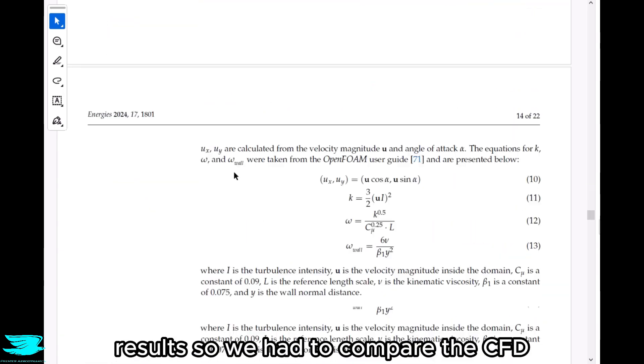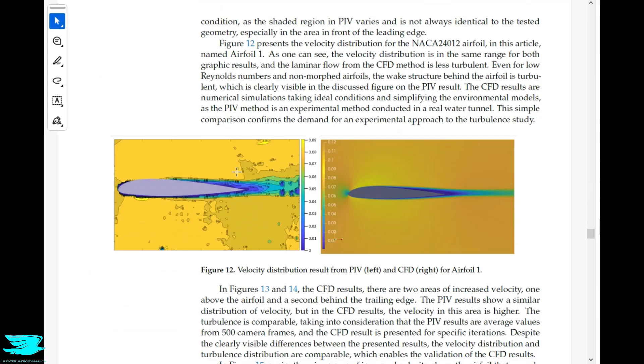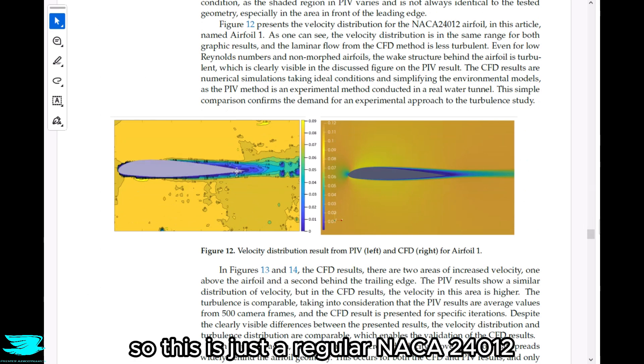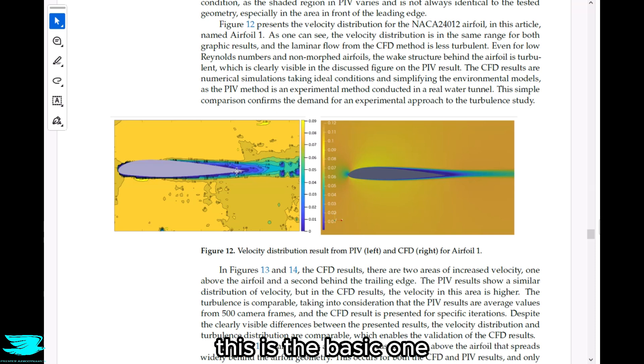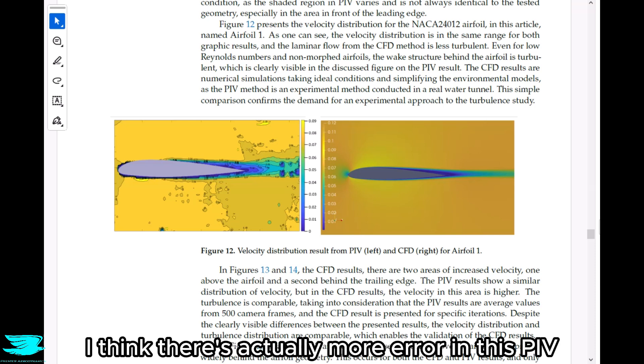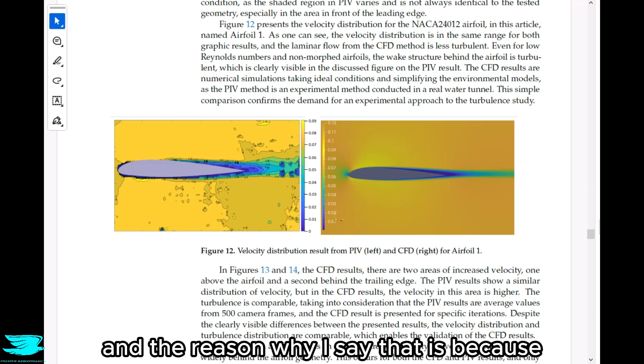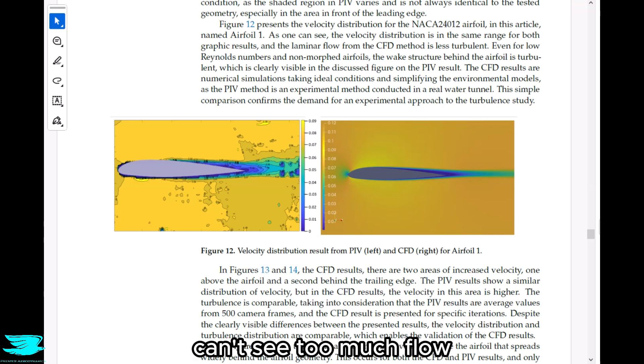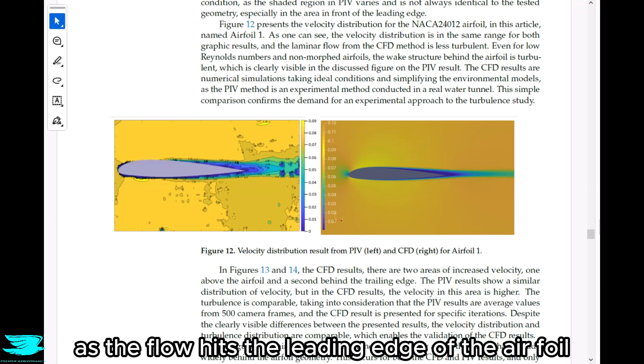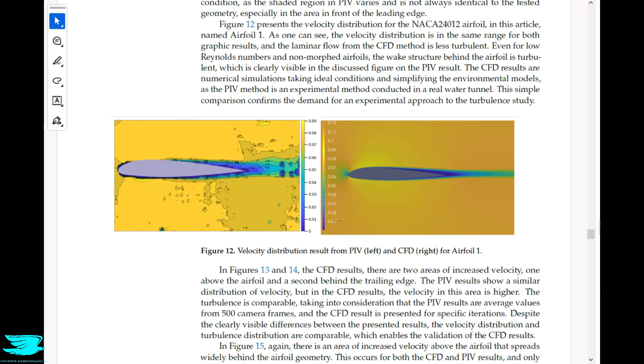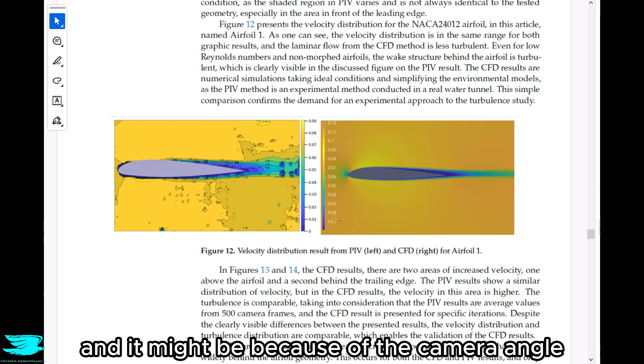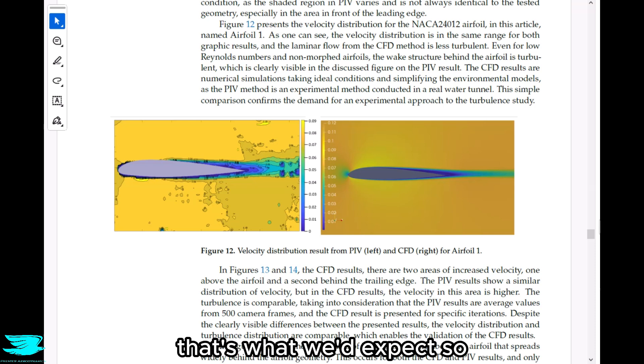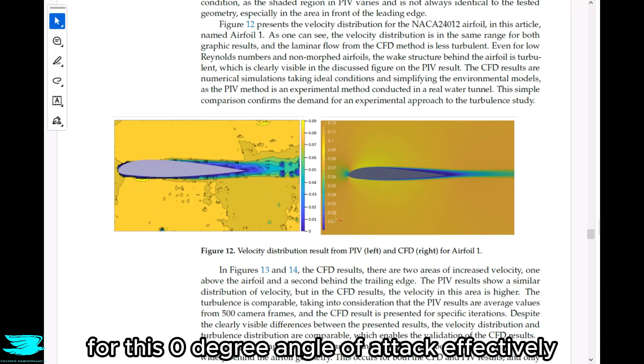Let's jump to their PIV results and their CFD results. So we'll be able to compare the CFD to the PIV and validate it. So in figure 12, we see their baseline airfoil, airfoil 1. So this is just the regular NACA 24-0-12 airfoil, not cambered, not morphed. This is the basic one. The PIV is on the left and the CFD is on the right. The velocity distributions are shown. So comparing the CFD to the PIV, it looks really good. In fact, I think there's actually more error in this PIV here than the CFD. And the reason why I say that is because if you look at the leading edge of the PIV, you can't see too much flow deceleration at the leading edge. So we know that as the flow hits the leading edge of the airfoil, we do get significant flow deceleration, but we don't see that too much here.